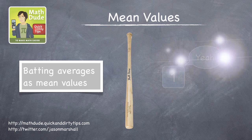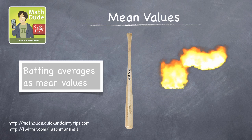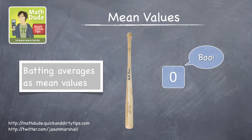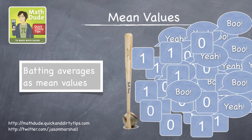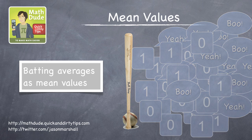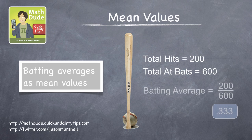Well, imagine that every time a hitter comes up to bat, you assign them either a 1 if they get a hit, or a 0 if they don't. At the end of the season, or any point in between really, you can add up all these 1s and 0s, which gives their total number of hits, and then divide this by the total number of at-bats. The fraction you obtain will be a number less than 1, and that number is the player's batting average.